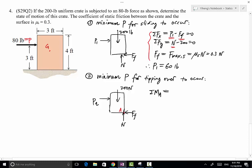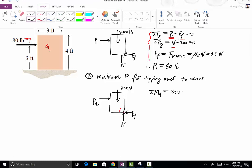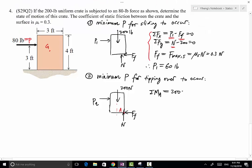So about point A we have 200 multiplied by this distance. This distance, because we have a uniform crate, so this distance right here is simply half of the width, therefore that's 1.5 feet minus P2 times the height is at 3 feet, so 3 equals 0. So from there P2 equals 100 pounds.